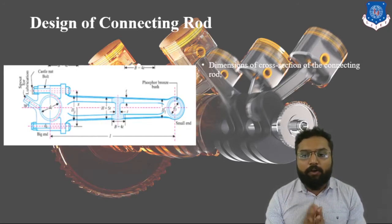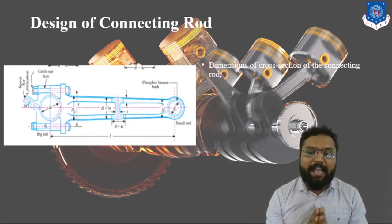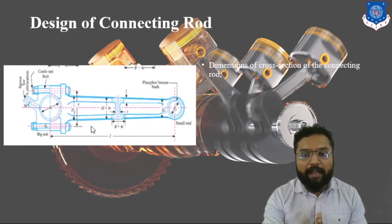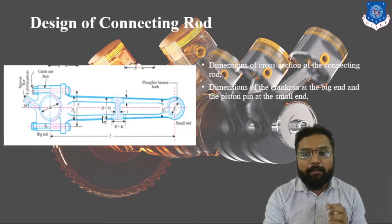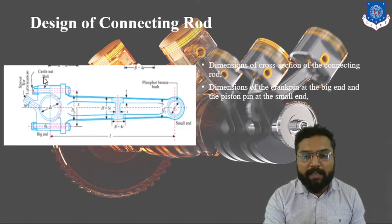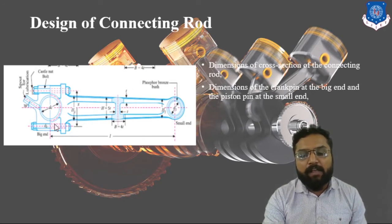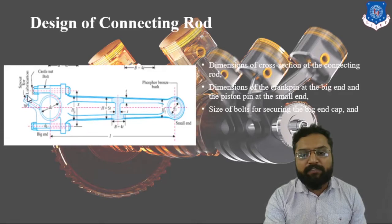There are mainly four sections we are going to design. One is the dimension of the cross section of the connecting rod — the shank part, which is the cross-section area. Then the dimension of the crank pin at the big end. Then the dimension at the small end. After setting up those dimensions, we are going to determine the size of the bolt which connects the big end to the body.